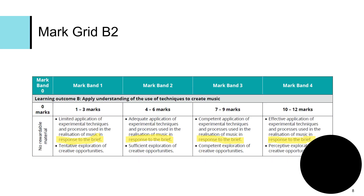Learners could become disadvantaged if they choose to ignore the set theme, because on two of the mark grids for task two — learning outcome B — there is specific reference made to responding to the brief. As highlighted on screen, learners need to be applying techniques and processes when creating their products in response to the brief. If learners choose to completely ignore it, they are going to have trouble scoring well on this particular grid.